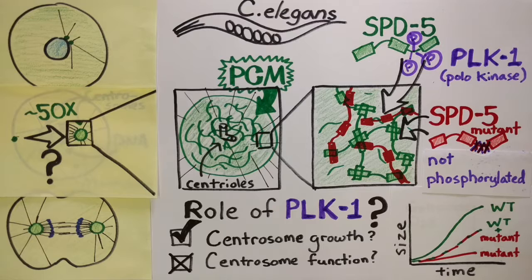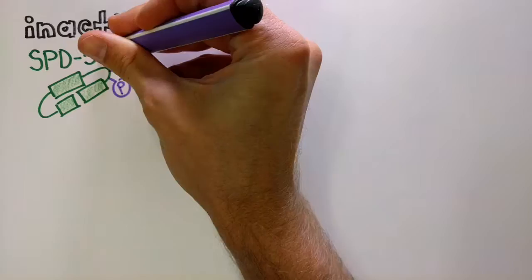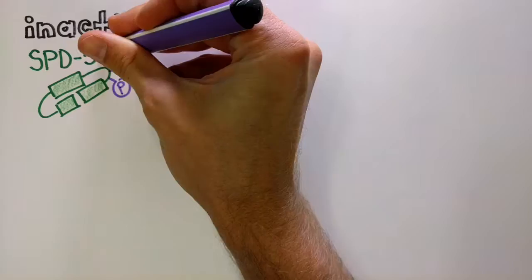Based on these data, we constructed a theoretical model in which PLK-1 phosphorylation controls the rate at which inactive individual SPD-5 molecules change into an active conformation that allows them to self-assemble.